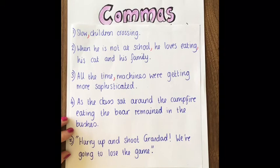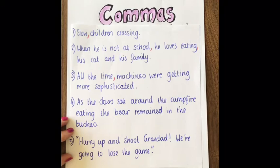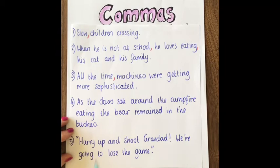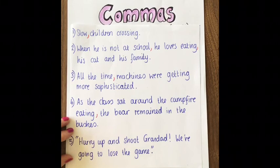In the fourth sentence: 'as the class sat around the campfire eating the bear remained in the bushes.' That doesn't sound right at all — without the comma it makes it sound like the class are eating the bear! We need to put a comma in the right place so that the class are sitting around the campfire, and the bear is watching from the bushes: 'As the class sat around the campfire eating, the bear remained in the bushes.' That sounds much better.